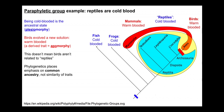Paraphyletic groups can also result when we focus on autapomorphies. Birds evolved to be warm-blooded and mammals also evolved to be warm-blooded — this is an autapomorphie shared by birds as a group. But when comparing birds to other large taxa, we don't want to focus on warm-bloodedness, because if we did we might be tempted to say mammals and birds are closely related. This is actually a case of convergent evolution — mammals evolved from cold-blooded ancestors.